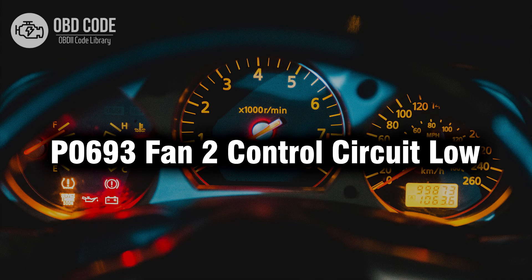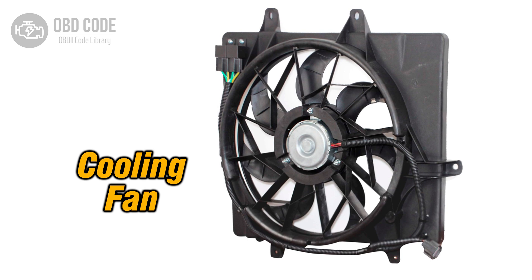Welcome. In this video we will talk about code P0693, its symptoms, causes and possible solutions. The P0693 trouble code indicates that the engine control module ECM or powertrain control module PCM has detected a low voltage condition in the control circuit for fan 2. Fan 2 is typically associated with the engine cooling system and is controlled by the ECM or PCM to regulate engine temperature. When the voltage in the control circuit falls below the specified threshold, the ECM or PCM triggers the P0693 code.